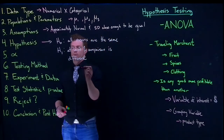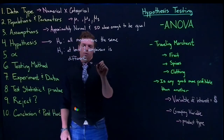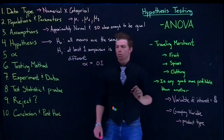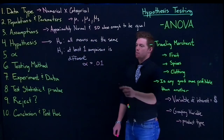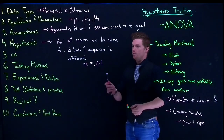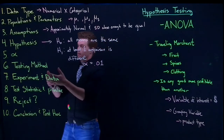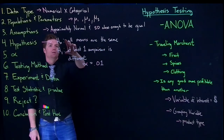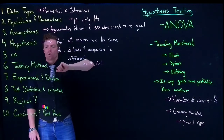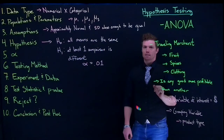Once we get to that point, we are ready to say alpha. A lot of times we'll do 0.05, but maybe we want to have a bunch of evidence supporting this, so maybe we set our alpha to 0.01. Once we have our alpha set, we're ready to establish what our testing method is. When our data type is numerical by categorical, it's obvious that we're going to be doing our ANOVA testing method.